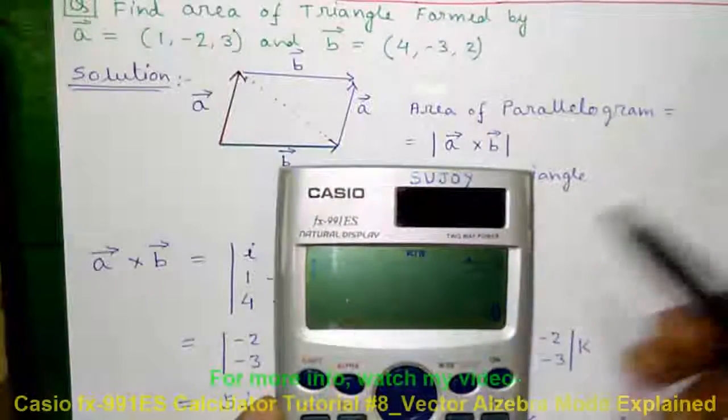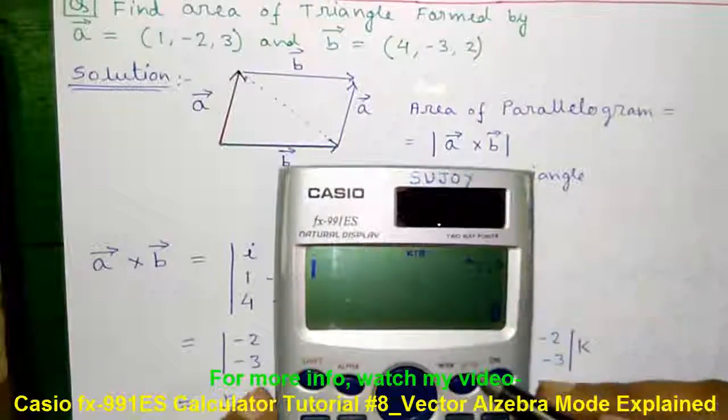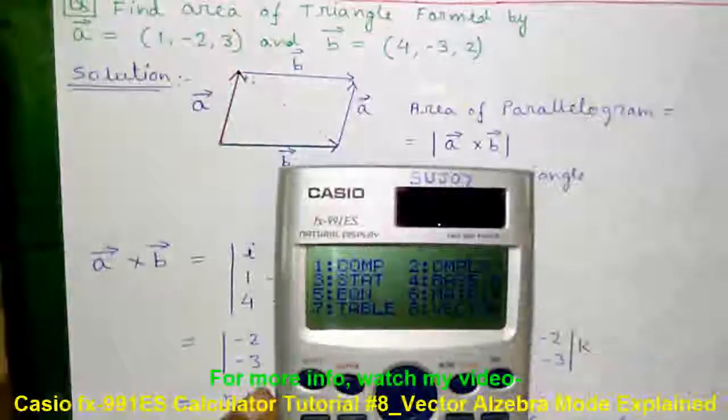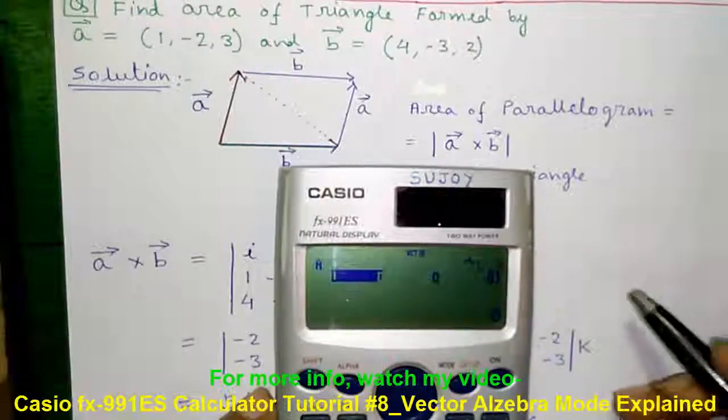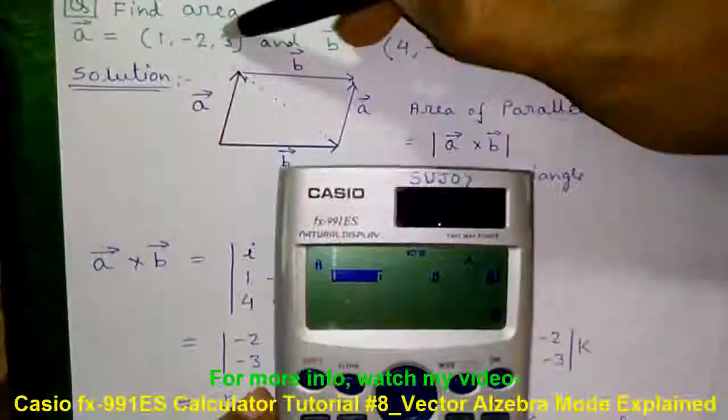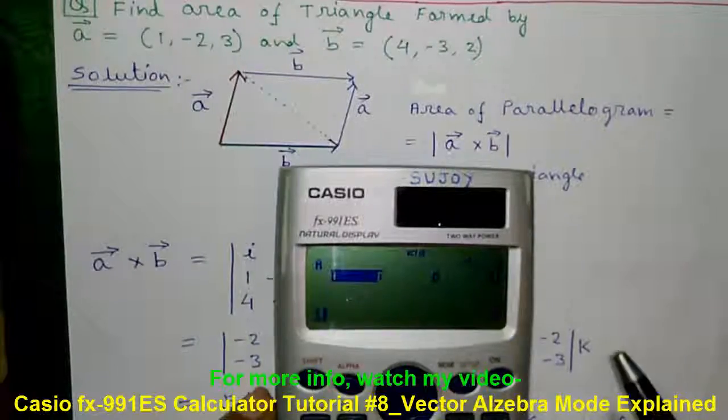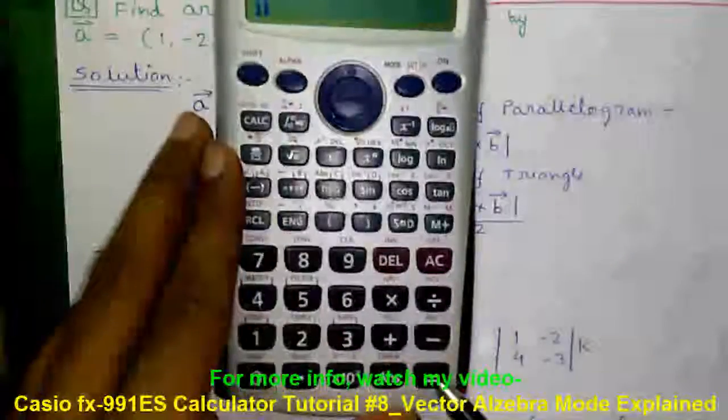And now I will tell you how to find area directly on this calculator. For that press mode, press 8 for vector, 1 for vector A and 1 for 3 element vector and enter the values 1, -2, 3. To enter a value type in the value and press equals to to enter.